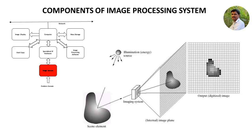When we examine the image sensors closely, we can observe two main parts. The first one is a physical device, that is the image sensor, which is sensitive to the energy radiated by the object. The sampling is done by these image sensors. The other one is a digitizer, which converts the electrical output of the physical sensing device into digital form. The process of converting the electrical output of the sensor into digital form is known as quantization.